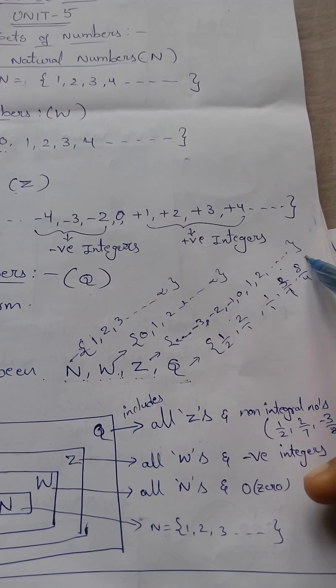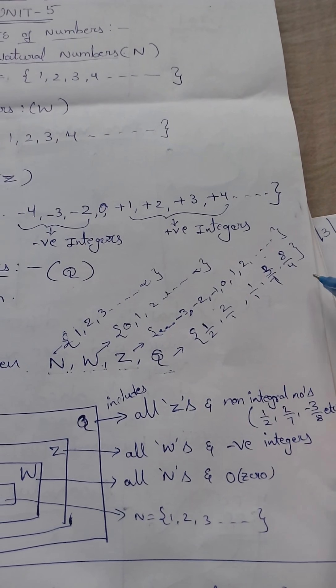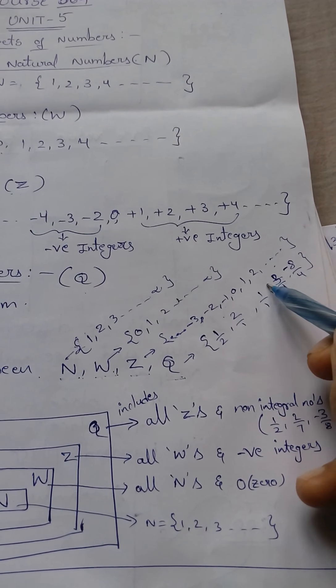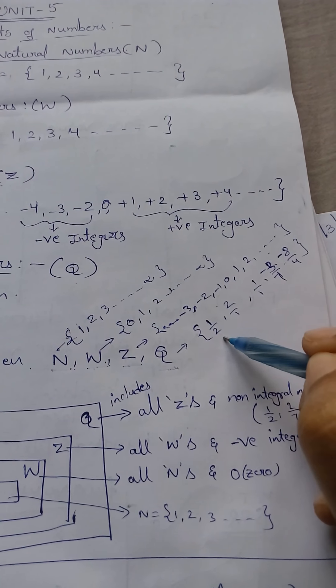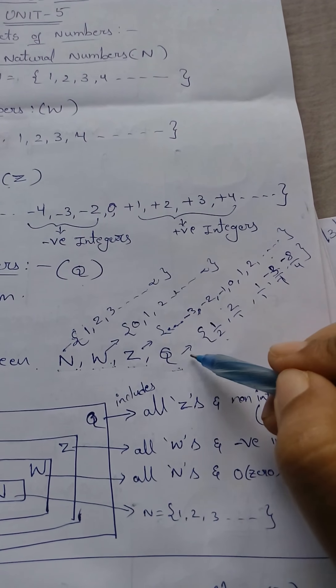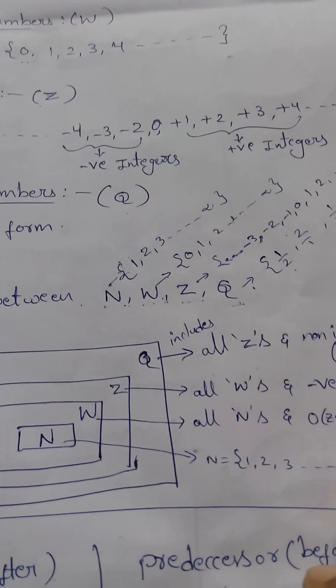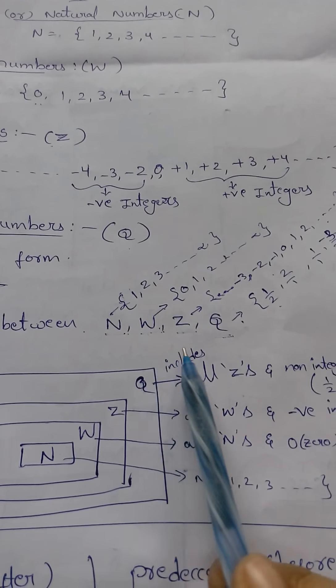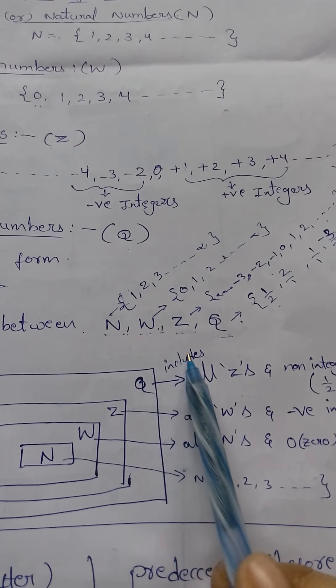1 by 1, 2 by 1, 3 by 1, any number. I can say it is in the P by Q form, either it may be negative or positive. Any number, if it is written in P by Q form, I can say this is a rational number. Now I am going to tell you the relation.